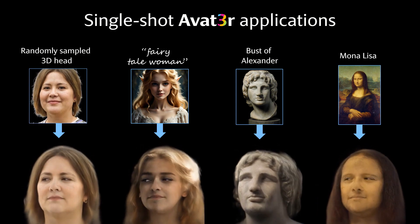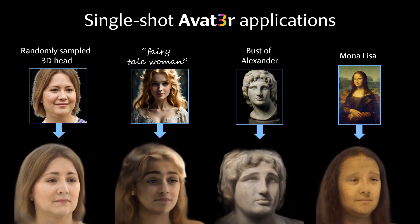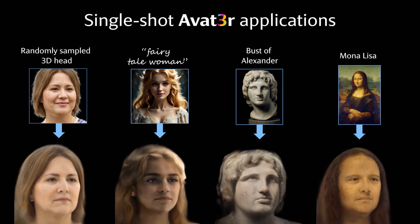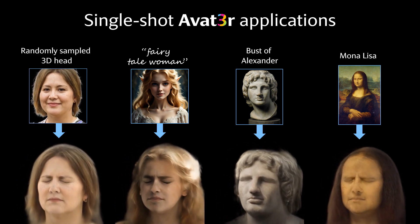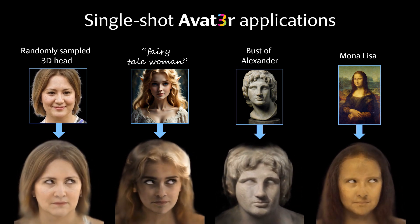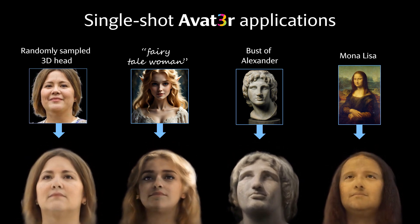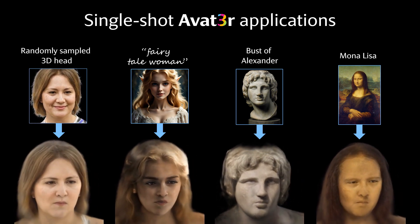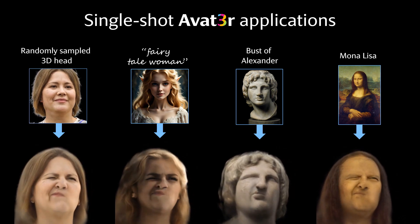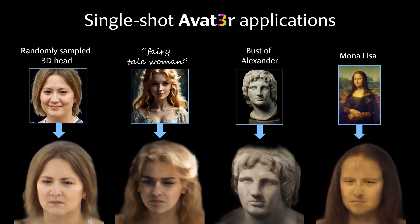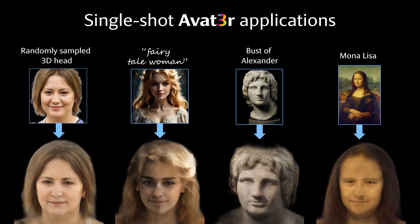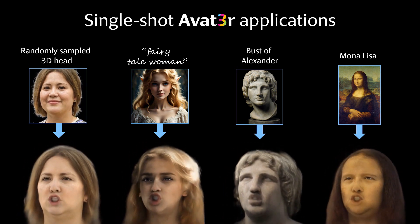Finally, we show more application scenarios of Avatar. Our method can animate heads randomly sampled from a 3D GAN, essentially making any static 3D GAN animatable. Avatar also generalizes beyond real faces, such as an image of a fairytale woman generated by a diffusion model. Avatar's animation capabilities even extend to highly out-of-distribution inputs, like images of antique busts or iconic paintings such as the Mona Lisa.